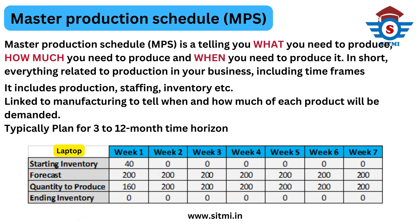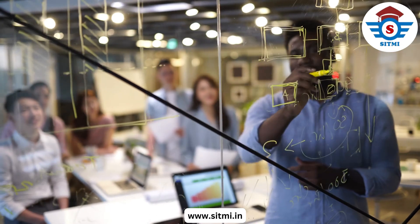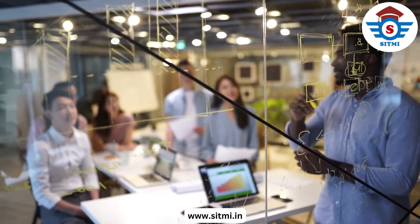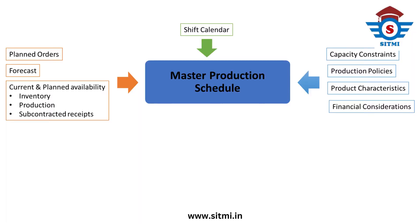So simply, Master Production Schedule considers available inventory, sales forecast, and time period, and accordingly determines what quantity we have to produce in that time period. While doing master production scheduling, it takes input from multiple factors because it is a systematic calculation of what to produce, when to produce, and how much to produce. There are multiple inputs that MPS takes, like capacity constraints — such as non-availability of labor or machine downtime — and it also considers production policies like minimum order quantity or batch size.